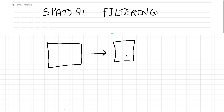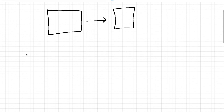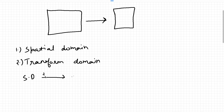This enhancement process can be done in two ways. The first is working in the spatial domain only — we directly work on the pixels of the input image. The second is working in the transform domain, where we take the input image from the spatial domain and apply a transform, such as the Fourier transform, to get the image into the frequency domain.